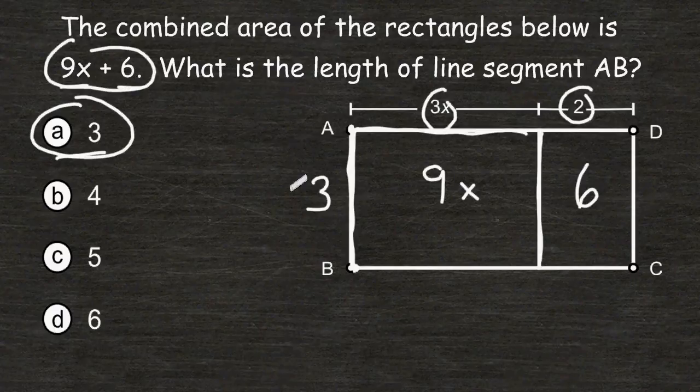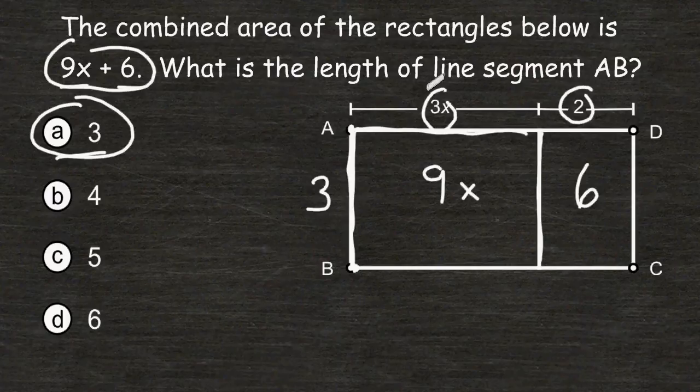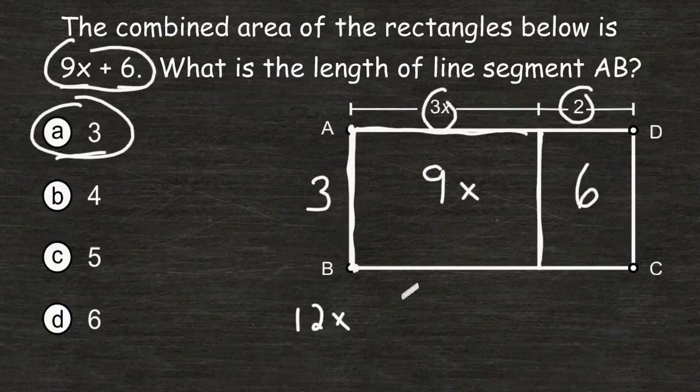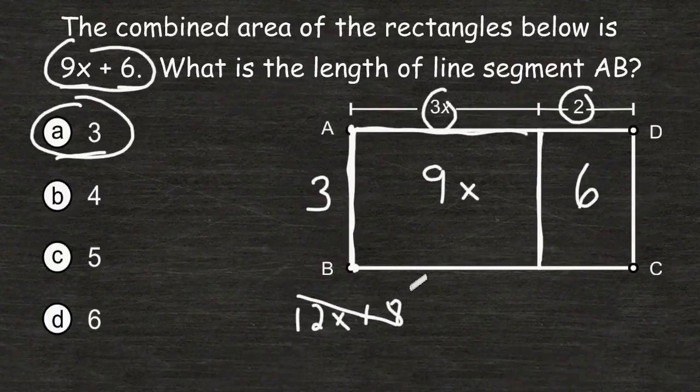For example, if we were to stick a 4 right here, we would have to multiply 4 times 3x, which would be 12x, and 4 times 2, which is 8. And that would give us a product of 12x plus 8, which is not the desired outcome that we are looking for.